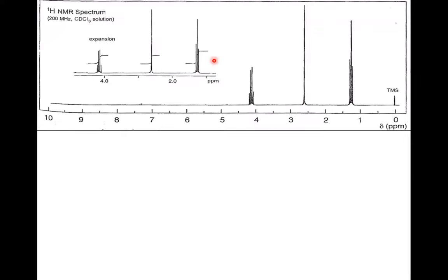Now we can apply some examples. Looking at this spectrum, how many peaks do we have? One, two, three — excluding TMS which is added for calibration to confirm the correct chemical shift. Is this structure aliphatic or aromatic? Aliphatic, because the chemical shifts appear at 1.2, 2.5, and 4 ppm — all in the aliphatic region. How many peaks? Three, meaning three types of protons, all different from each other because of the factors we discussed — differences in the surrounding environment.